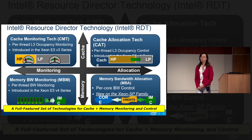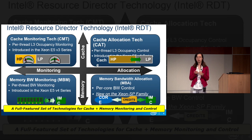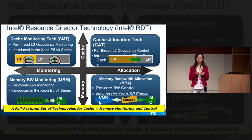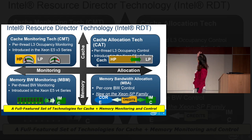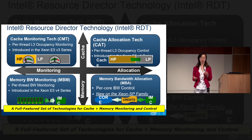Here I'm showing some features of RDT technologies, which include monitoring and allocation. For monitoring, we have Cache Monitoring Technology, codenamed CMT, which provides per-thread last-level cache occupancy monitoring, and Memory Bandwidth Monitoring, which periodically measures how much bandwidth is utilized by each thread. On the allocation side, we have CAT, the Cache Allocation Technology, and MBA, which is Memory Bandwidth Allocation. Intel RDT provides new visibility and capability to control how shared resources are utilized by each application on a per-thread basis.